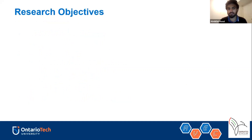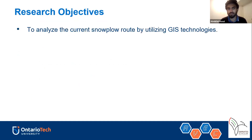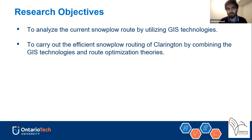This paper was related to a project from one of the cities. The first thing we needed to do was to analyze the current snowplow routes by using GIS — Geographic Information System — technologies, and then to carry out efficient snowplow routing for the city of Clarington in Ontario by combining these technologies and route optimization theories.